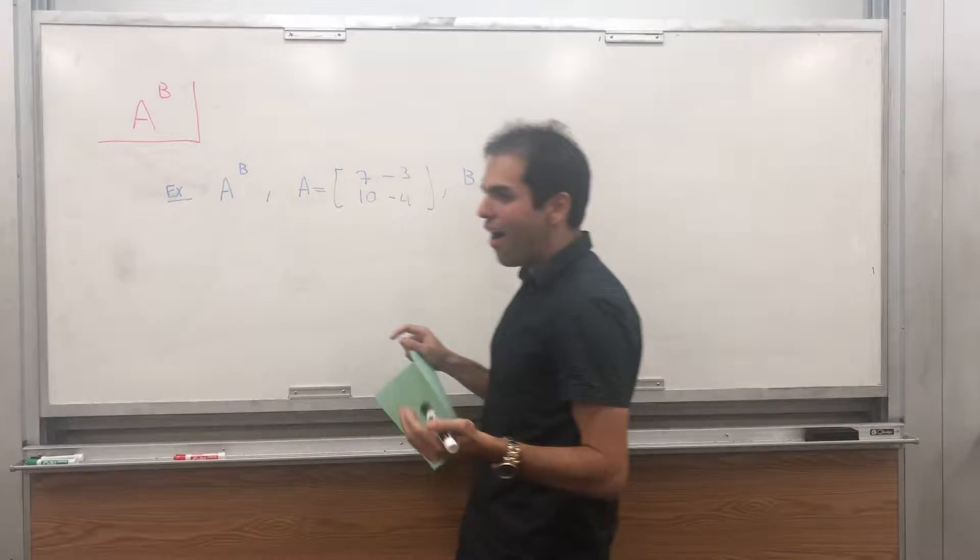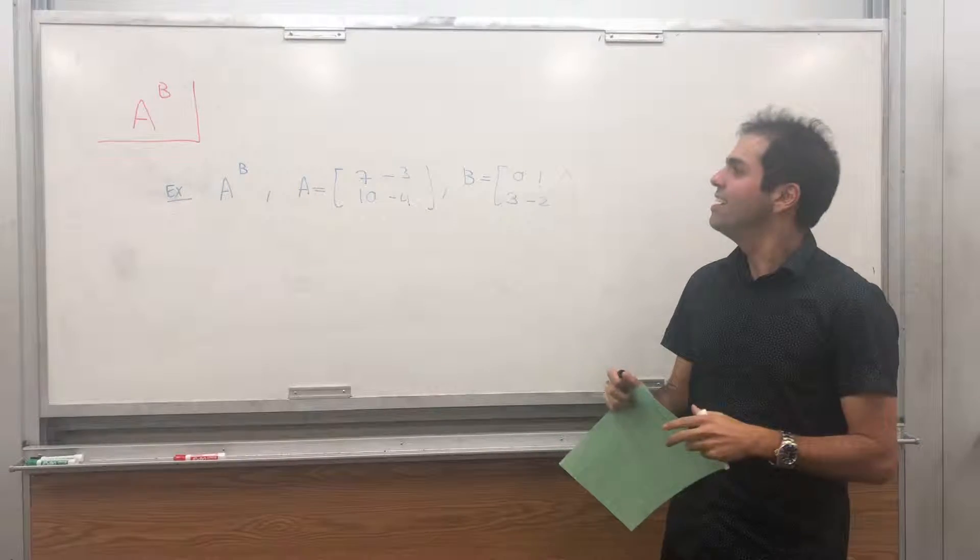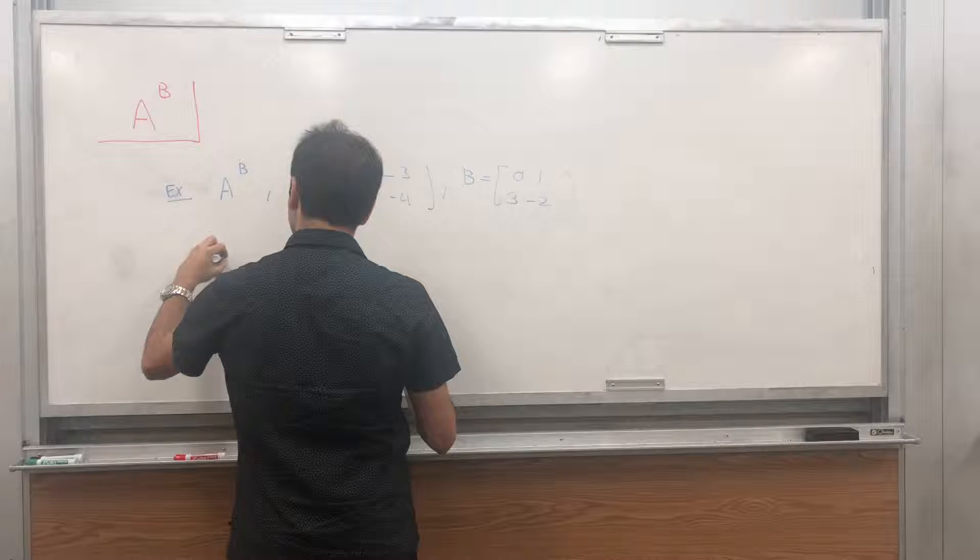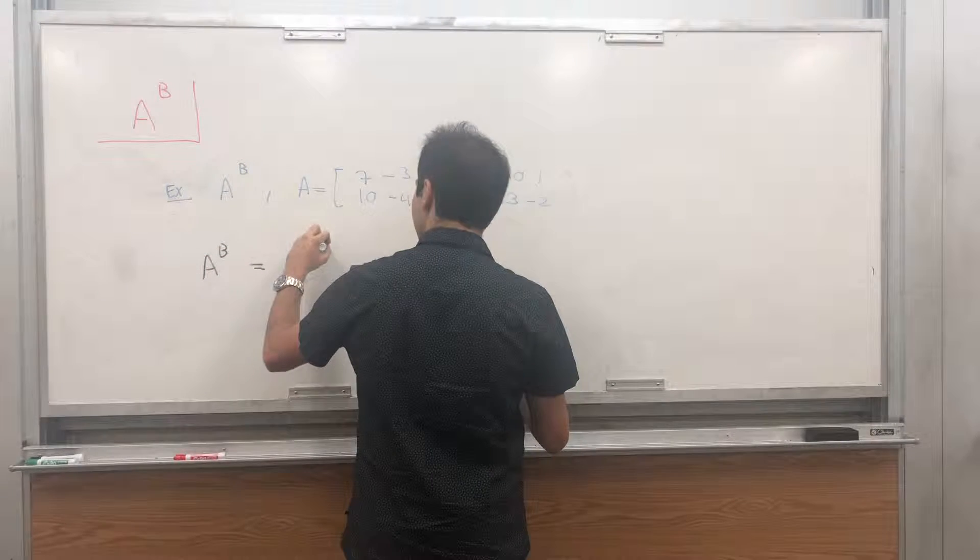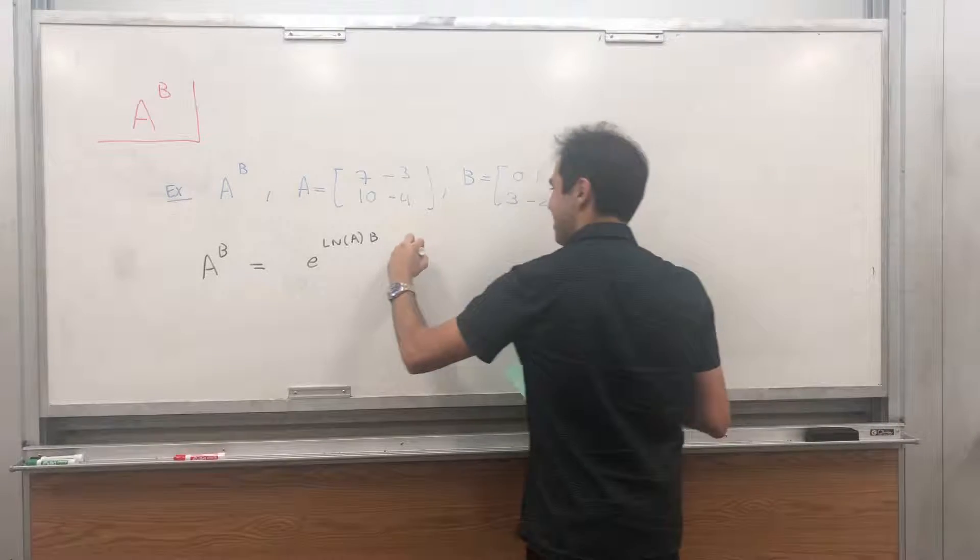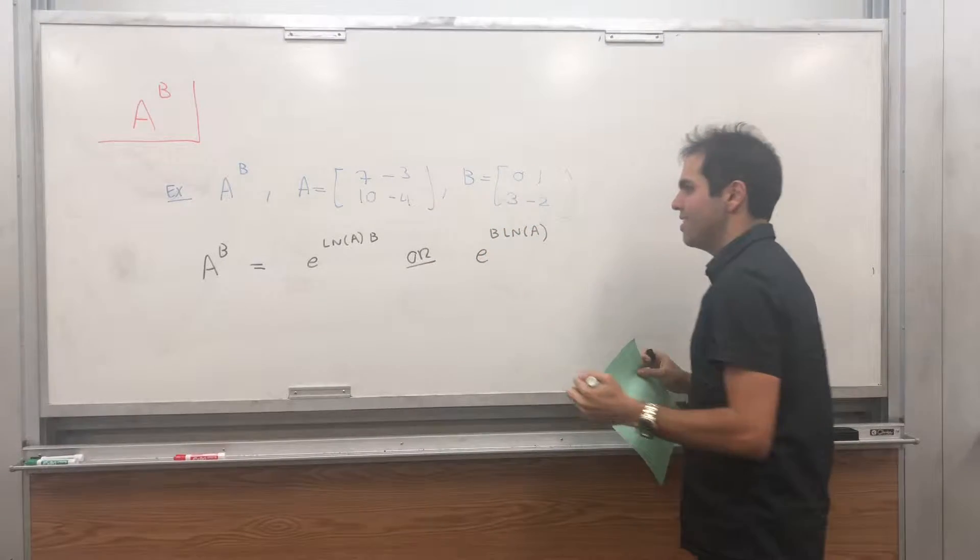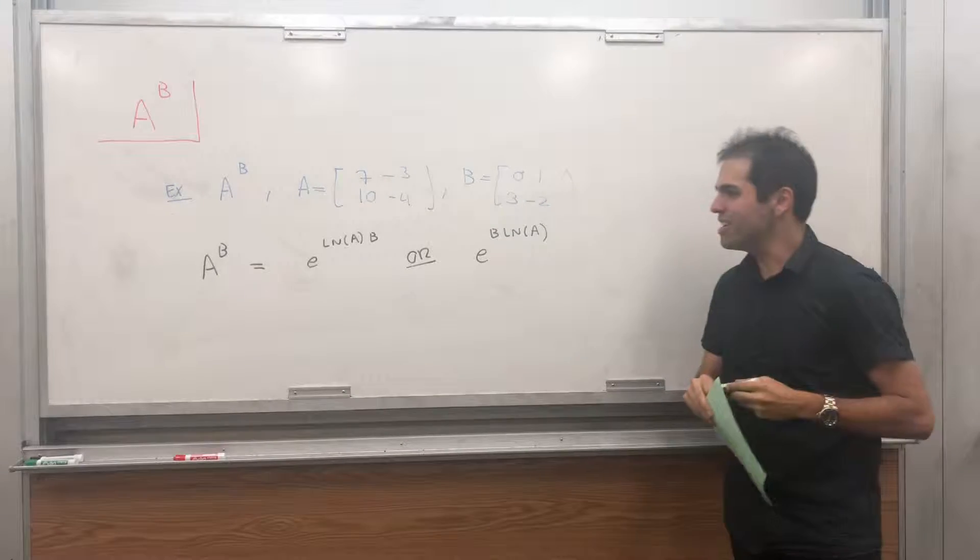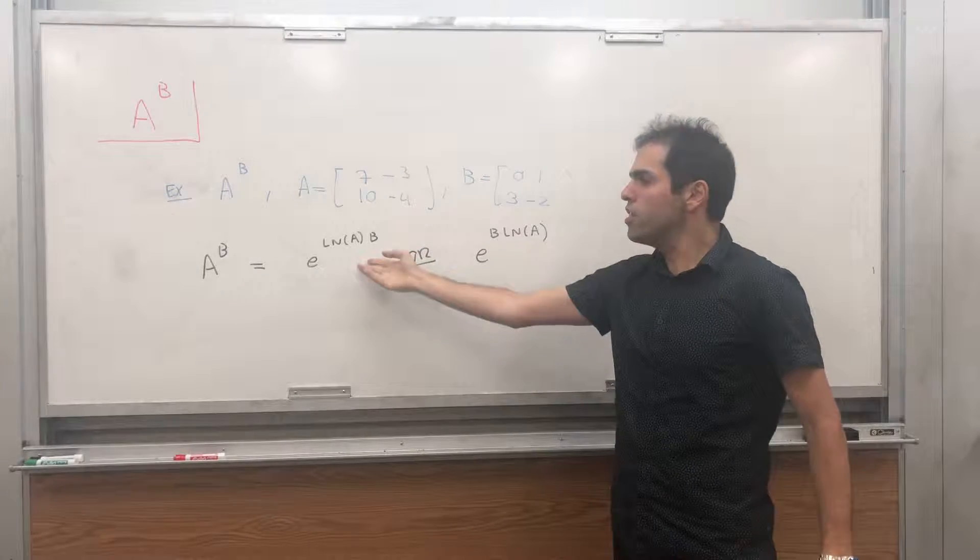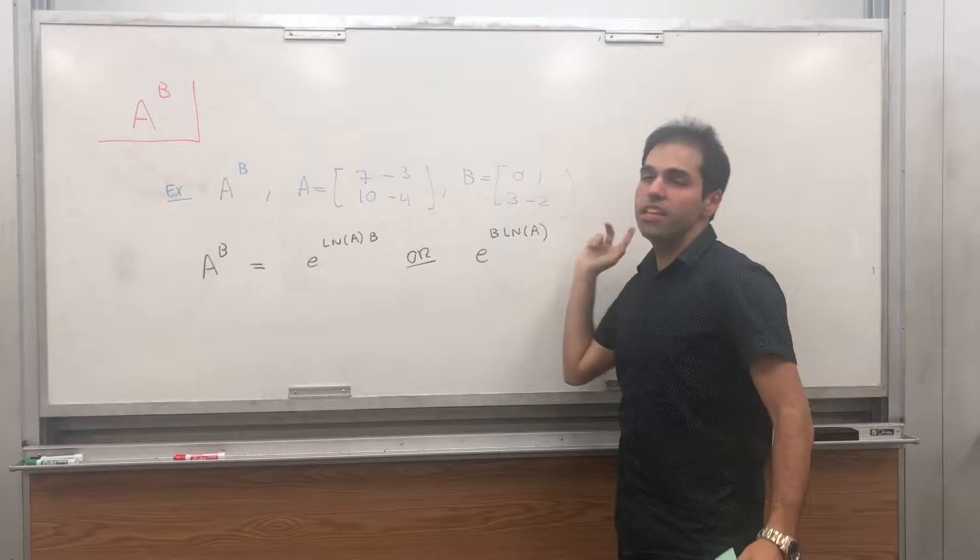Well, we do know how to evaluate the function applied to a matrix. In particular, we know how to evaluate ln of A. And so the question is, then how can we evaluate A to the B? Well, A to the B, you can really think of it as e to the ln of A times B. Or, and here's where the tricky issue lies, why not e to the B ln of A? In single variables, those both give you A to the B.